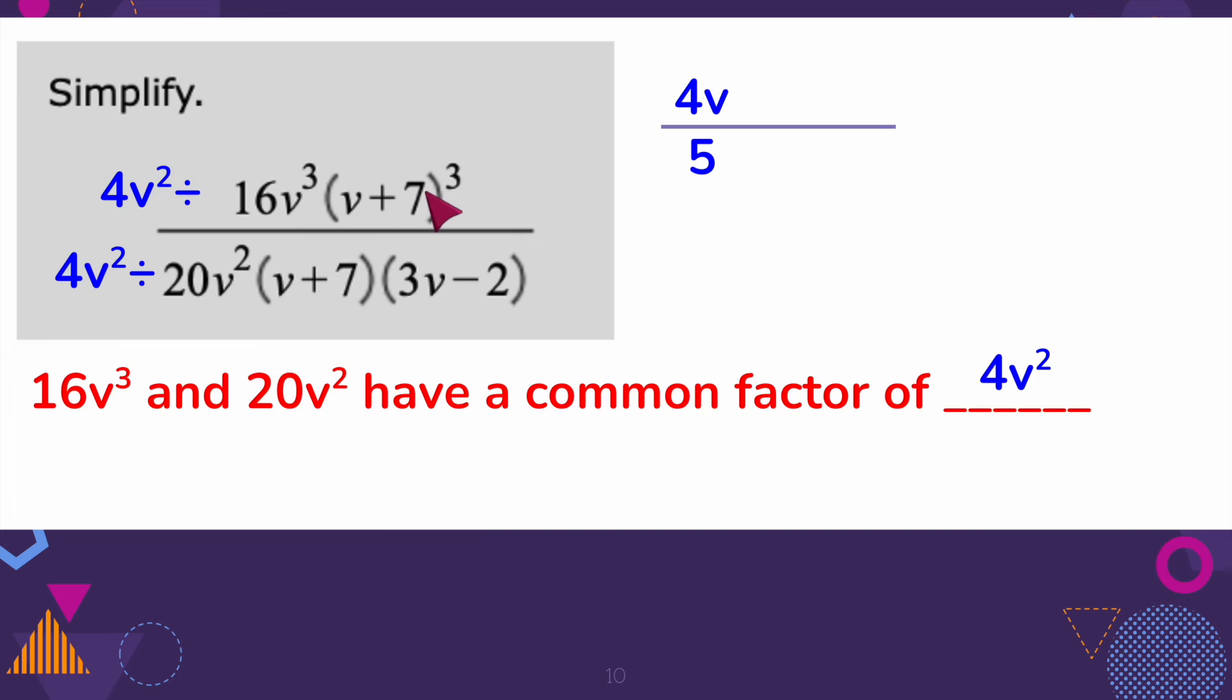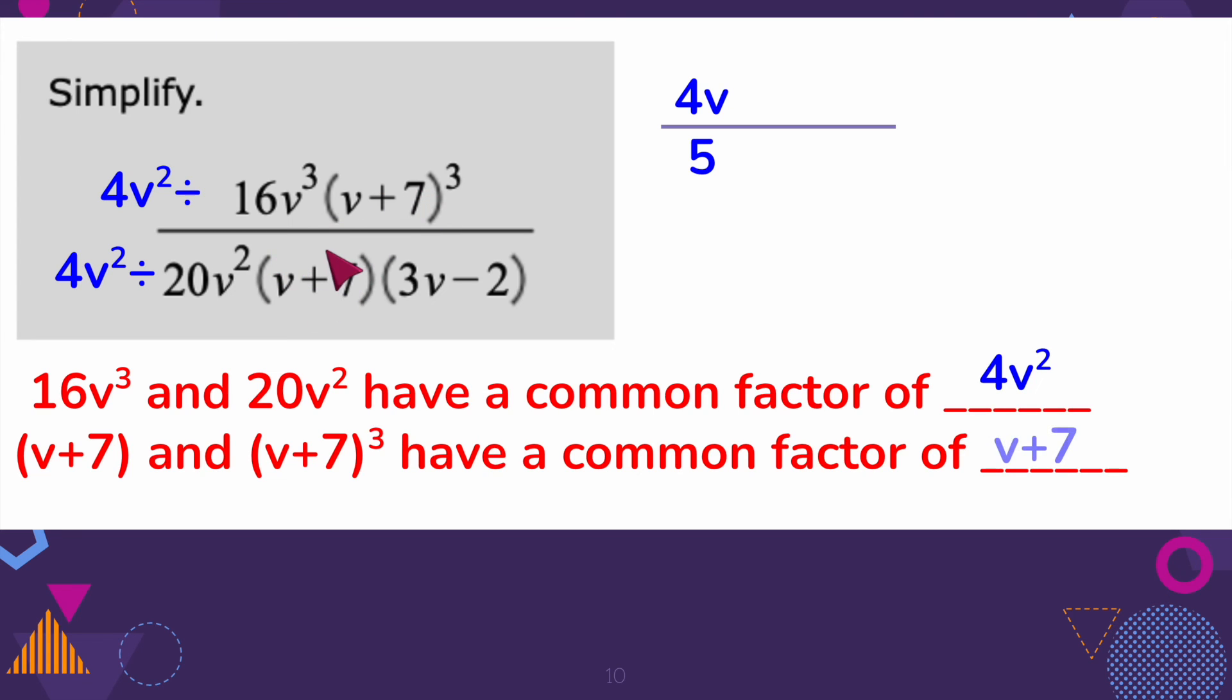I have V plus 7 cubed, and V plus 7 times 3V minus 2. So I have 3 V plus 7s up here, and I have 1 down here. So I can cancel 1 on top with the 1 on the bottom. So I'm going to go ahead and cancel that common factor out. Now, it doesn't cancel all of them, just one of them, so I'm left with two of them. So I have V plus 7 squared over 5 times 3V minus 2.